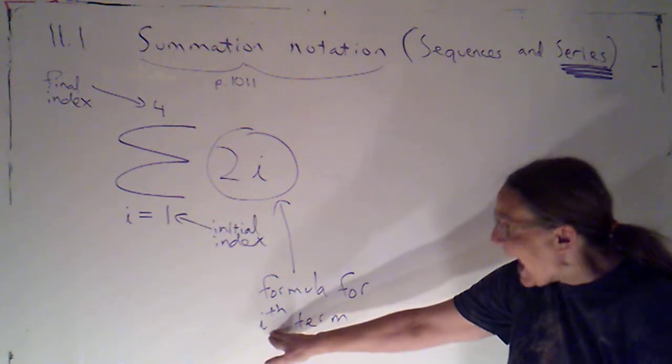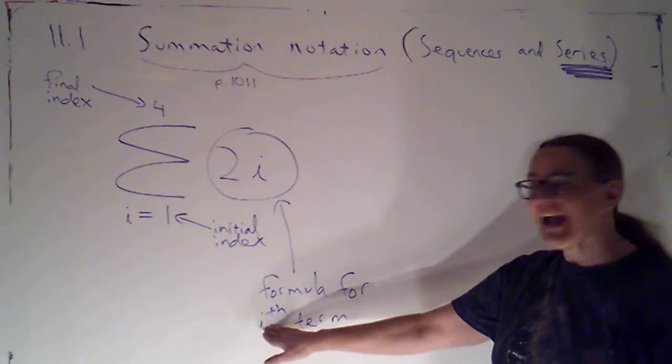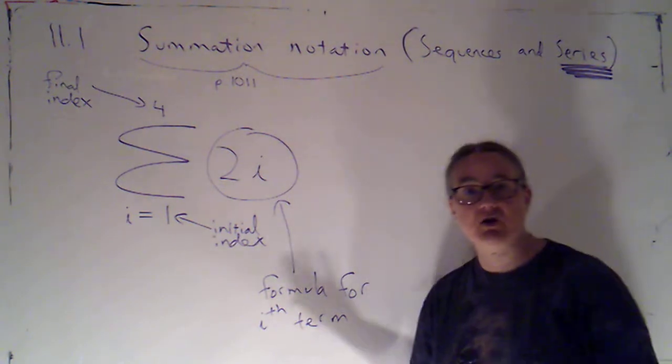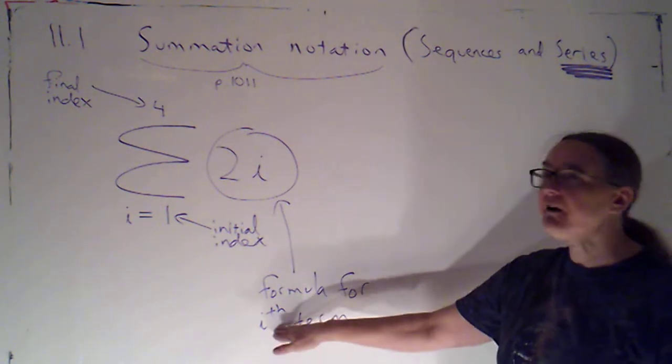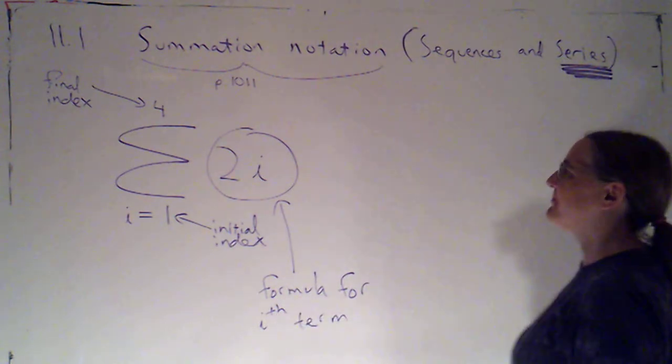My first term is two times one. That's two. My second term is two times two. That's four. My third term is two times three. Six. My fourth term is two times four. So what we put here is a formula for the I-th term.